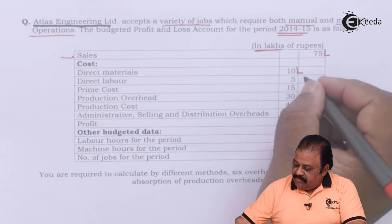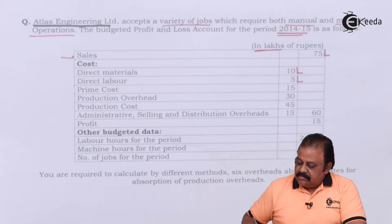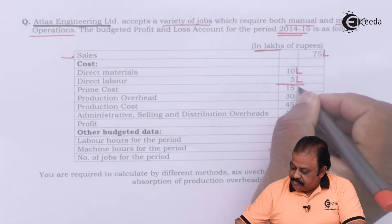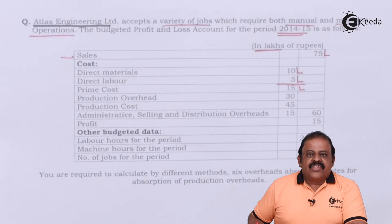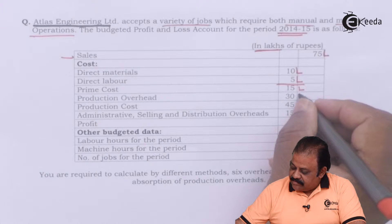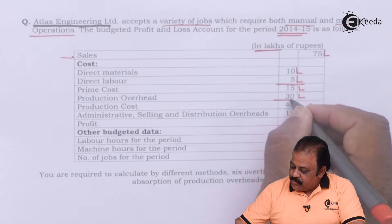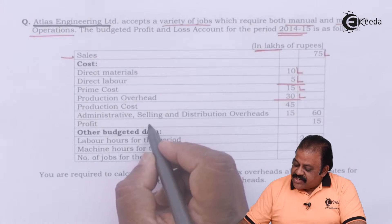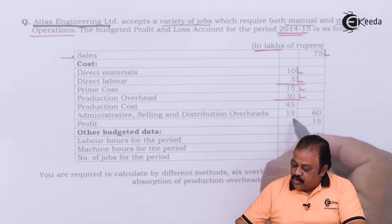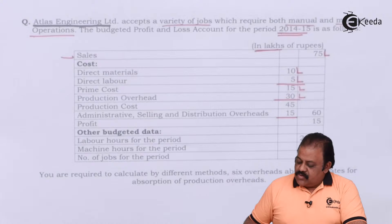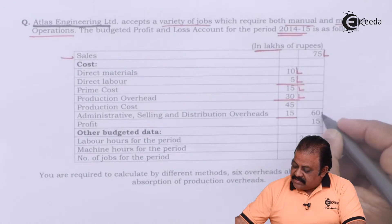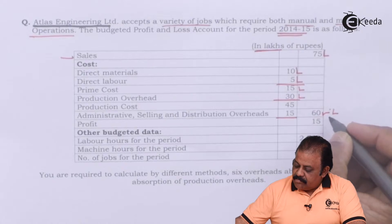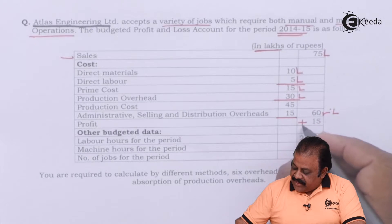Direct labor 5 lakhs, giving prime cost 15 lakhs. Production overheads 30 lakhs, factory cost 45 lakhs. Administration, selling and distribution overheads 15 lakhs, so total cost is 60 lakhs, plus profit 15 lakhs.